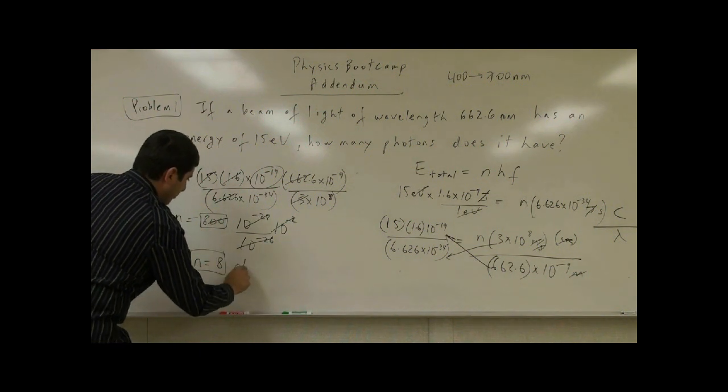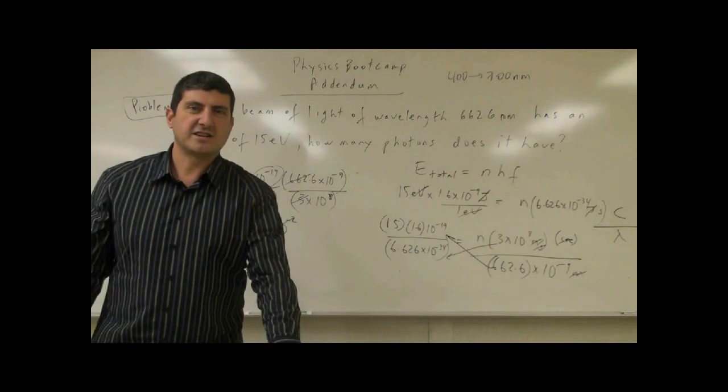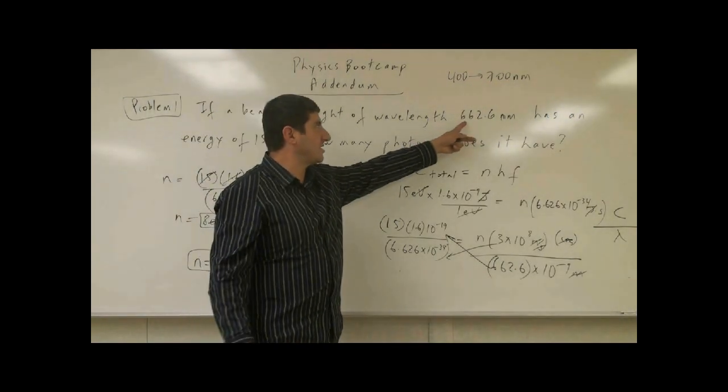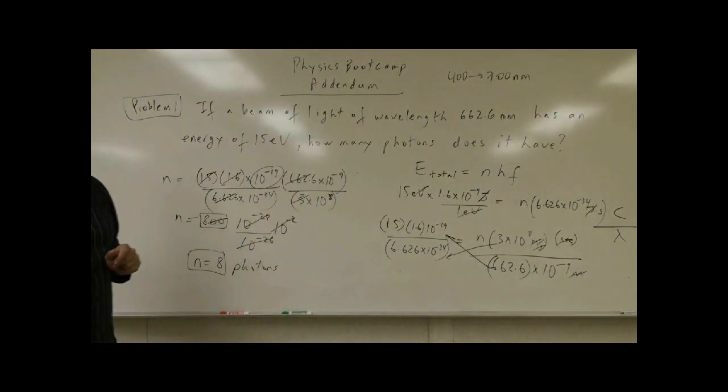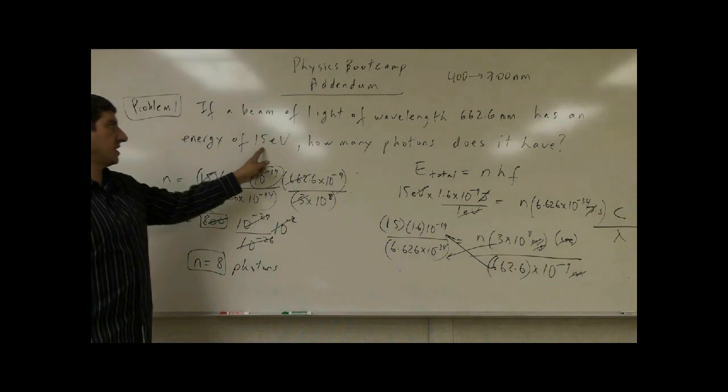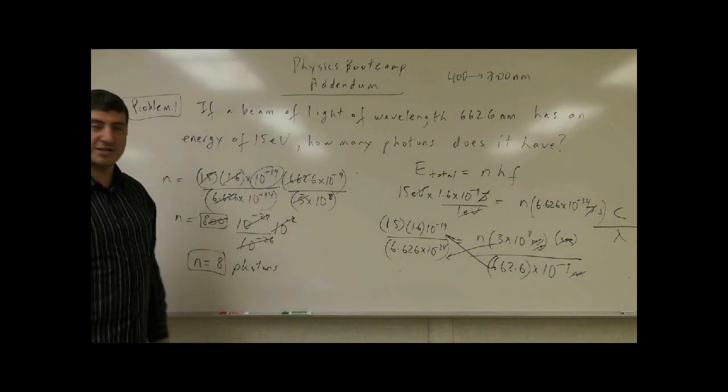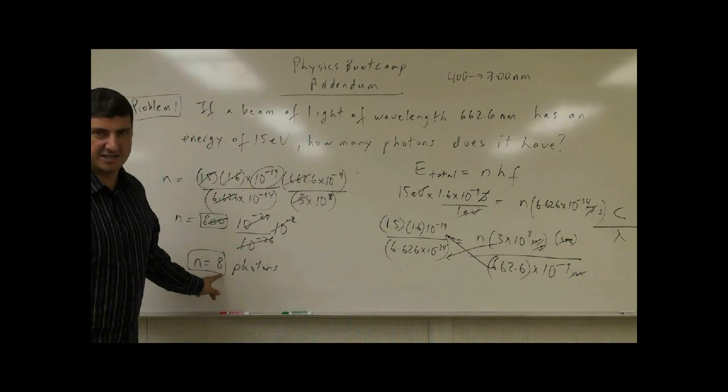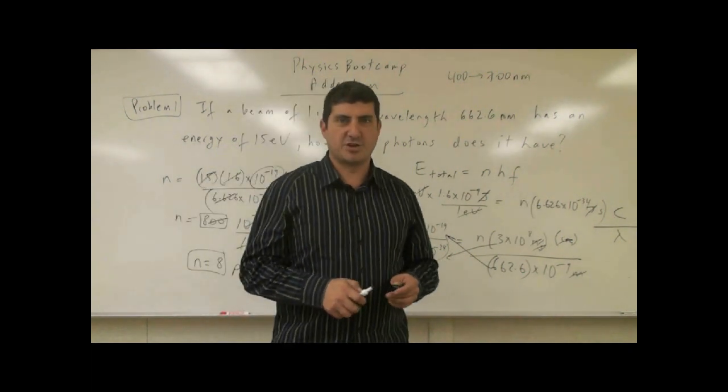So, that beam of light is not energetic at all. A beam of light of red light, which has a wavelength of 662.6 nanometers. If it only carries energy of 15 electron volts, that means it's not very energetic. It only has 8 photons in there. So, now you can see how to approach these problems. Thank you.